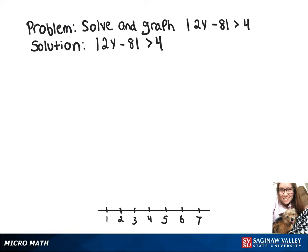In this video, we're going to solve and graph the absolute value of 2y minus 8 is greater than 4. So that means we've got 2y minus 8 is greater than 4, or 2y minus 8 is less than negative 4.